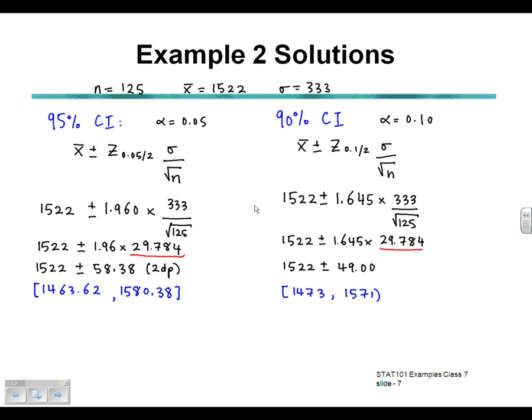Notice we have the 95% confidence interval and the 90% confidence interval. Which of those is the widest? The wider interval will be the 95% — it is of course wider than the 90% confidence interval. This will always be the case: if nothing else changes, the 95% confidence interval will always be wider than the 90% confidence interval.